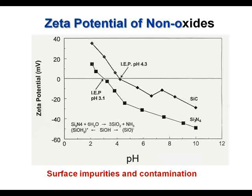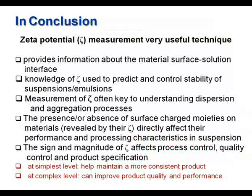In conclusion, zeta potential measurement — though often underutilized — is a very useful technique that can provide information about the material surface-solution interface. Knowledge of zeta can be used to predict and control the stability of suspensions, and is often the key to understanding dispersion and aggregation processes. The presence and absence of charge groups on the surface of materials affects their performance and processing characteristics. The sign and magnitude of zeta potential affects process control, quality control, and product specification — not just as a tool for R&D. At the simplest level it can help maintain a more consistent product, and at a complex level it can improve product quality and performance. Thank you very much for your attention.